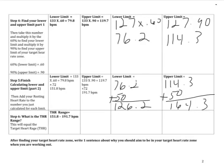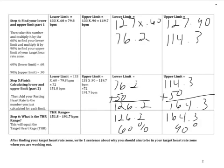So 60% of my maximum heart rate is 126.2, and 90% of my maximum heart rate equals 164.3. My target heart rate zone is between 126.2 and 164.3 — that's where I would like my heart rate to be while exercising to get the most cardiovascular benefits possible.